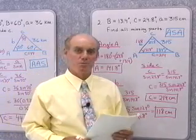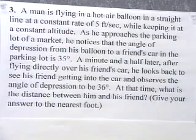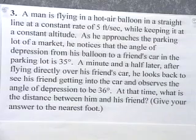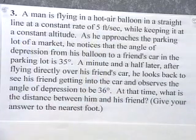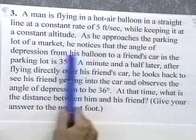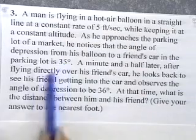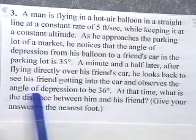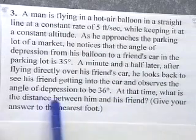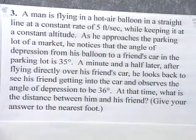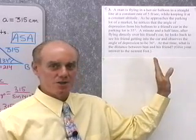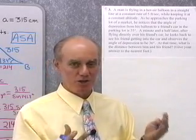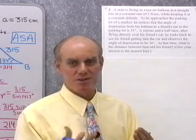Let's go on to the next problem, which is a word problem or application problem. A man is flying a hot air balloon in a straight line at a constant rate of 5 feet per second while keeping it at a constant altitude. As he approaches a parking lot, he notices the angle of depression from his balloon to a friend's car is 35 degrees. A minute and a half later, after flying directly over his friend's car, he looks back and observes the angle of depression is 36 degrees. What's the distance between him and his friend at that time?